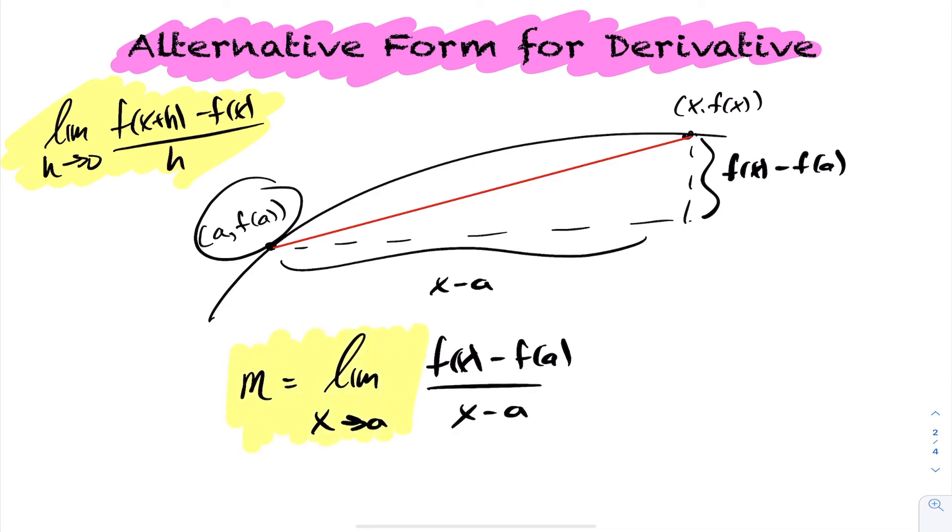So now we have an alternative formula for the slope of your tangent equation. We had this formula for slope, and this is also our slope at the point. Let's take a look at doing this in an example.